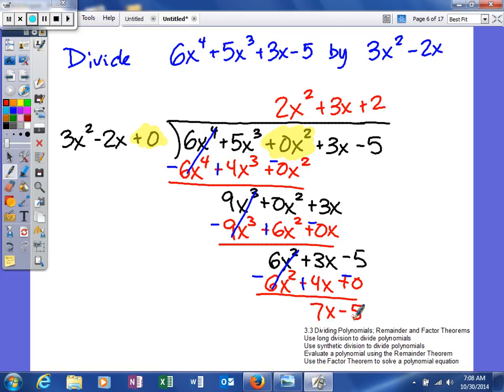So this is my remainder. And the way I show my remainder in my problem is I put plus my remainder, 7x minus 5, over my divisor of 3x squared minus 2x. So that's the last example of long division.